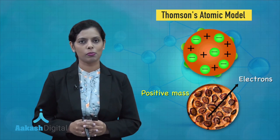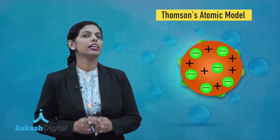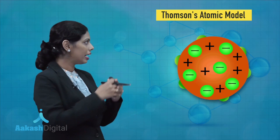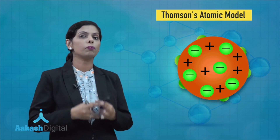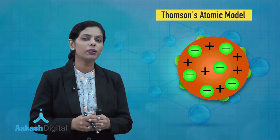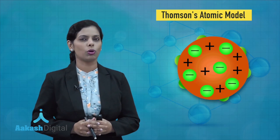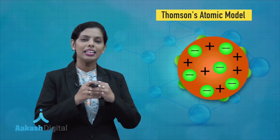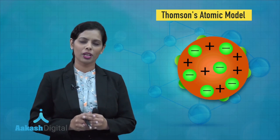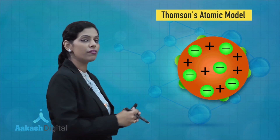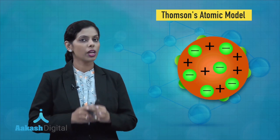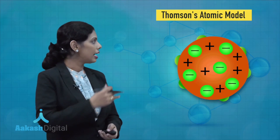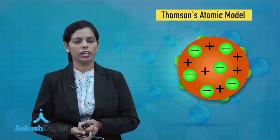But one thing you should know is that positive charge and negative charge have a force of attraction. And if this negative charge is embedded in a positive charge, the possibility of the existence of this model is quite low. That is also considered a limitation of this model. I hope you are able to identify Thomson's model and how Thomson arranged the electrons in the atom.